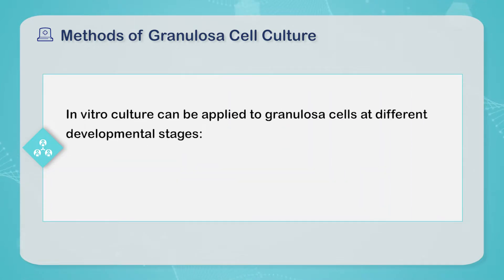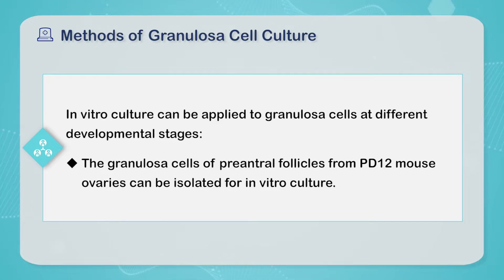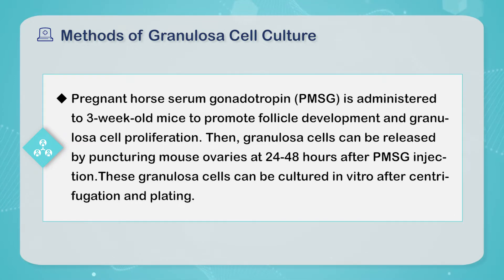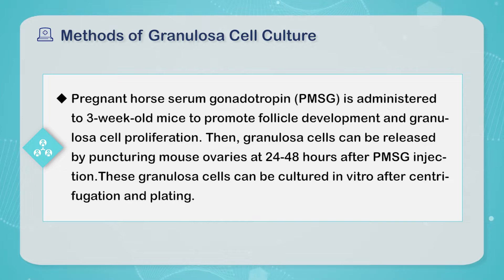In vitro culture can be applied to granule cells at different developmental stages. For example, the granule cells of pre-antral follicles from postnatal day 12 mouse ovaries can be isolated for in vitro culture. More commonly, pregnant mare's serum gonadotropin (PMSG) is administered to three-week-old mice to promote follicle development and granule cell proliferation. Then, granule cells can be released by puncturing mouse ovaries at 24 to 48 hours after PMSG injection.